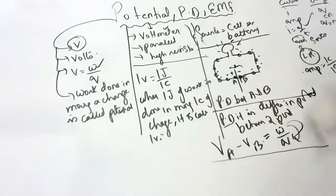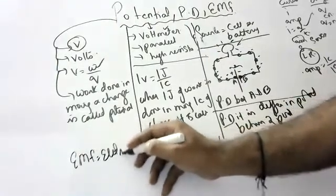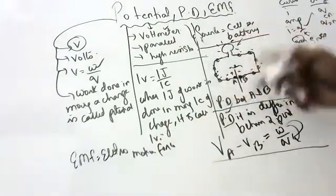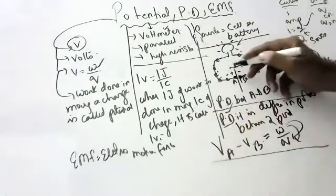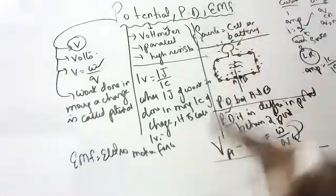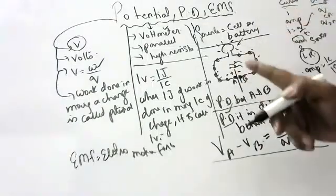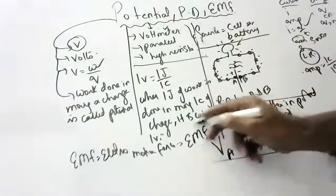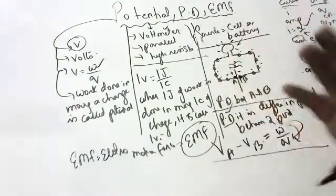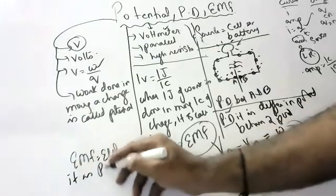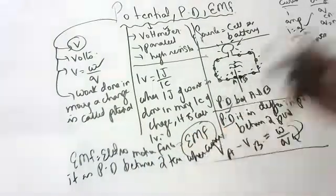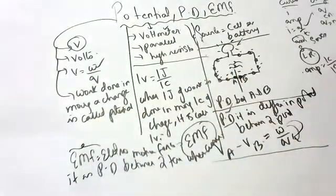What is EMF? EMF means electromotive force. When current is flowing, the potential difference is called potential difference. When current is not flowing, the potential difference between two terminals is called EMF — electromotive force. So: current flowing → potential difference. Current not flowing → electromotive force.